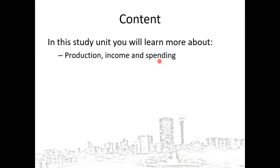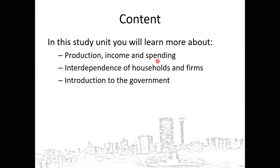We shall take into account the interdependence of households and firms — how do households and firms interlink. After that, we shall introduce the government. When we first take into account the interdependence of households and firms, we are referring to what is known as the circular flow model of income. But we shall go a step further whereby we introduce the government, because only taking into account households and firms is not enough within the economy.